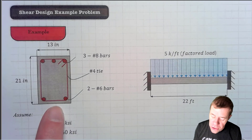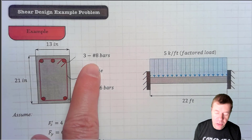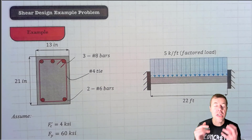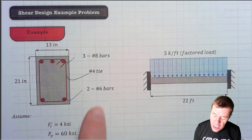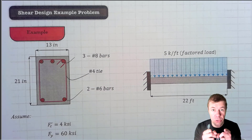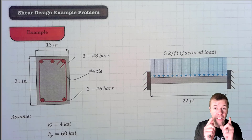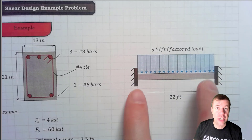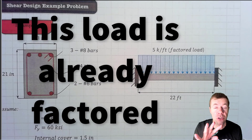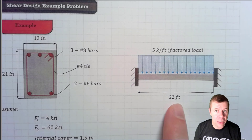We're going to be designing this beam. It's 13 inches wide, 21 inches high. It's got three number eight bars at the top, two number six bars at the bottom, and a number four tie. We're using a fix-fix beam. It has a five kip per foot factored load on it — already factored, we don't need any dead load or live load. It's 22 feet long.